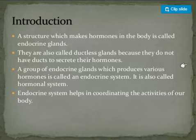All hormones belong to one of two categories: steroid hormones or non-steroid hormones. All steroid hormones, as the name shows, are made of cholesterol, which is a type of lipid or fat. On the other hand, there are three types of non-steroid hormones that are made up of amino acids.